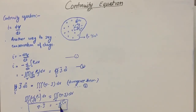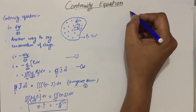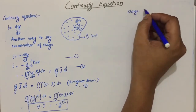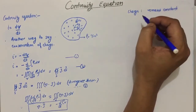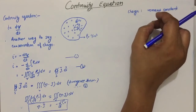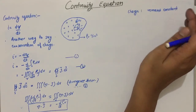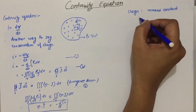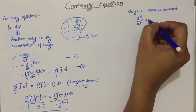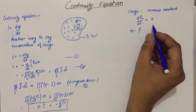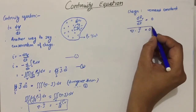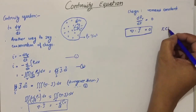This is our continuity equation. The rate of change of charge density is negative. Consider a case: in a closed circuit when you apply KCL, the charge remains constant — it is just following the closed path. So if charge remains constant, then ∂ρv/∂t equals zero, and in that case divergence of current density J equals zero.